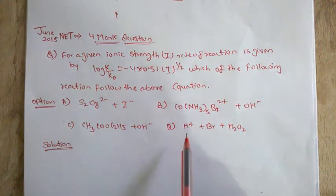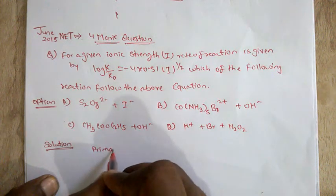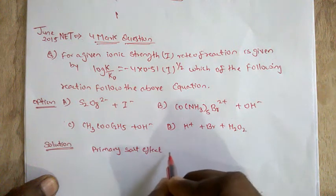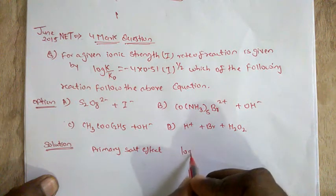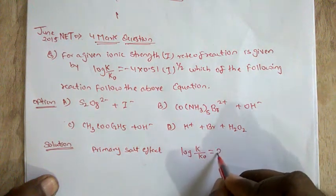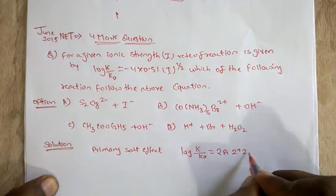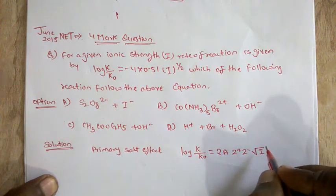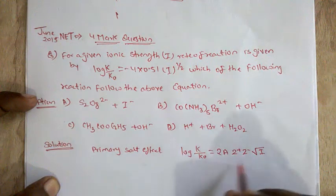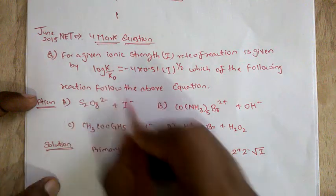You know the primary salt effect formula: log k/k0 equal to 2A times z+ times z- times root i. By comparing this formula with the given equation, we can extract the relevant parameters.